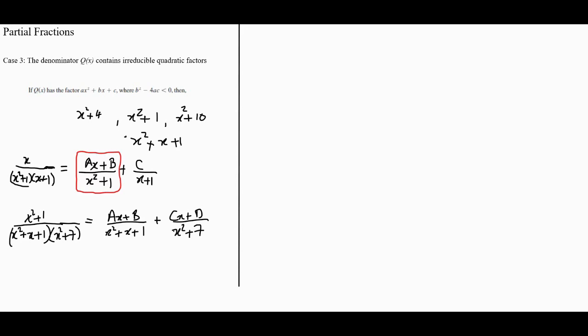Now, the next steps are the same as what we've seen before. You multiply both sides by the denominator, and then you look for the constants in the usual manner. In the cases of irreducible quadratics, you end up using more comparison of coefficients than in normal cases. Let's look at a full example now.